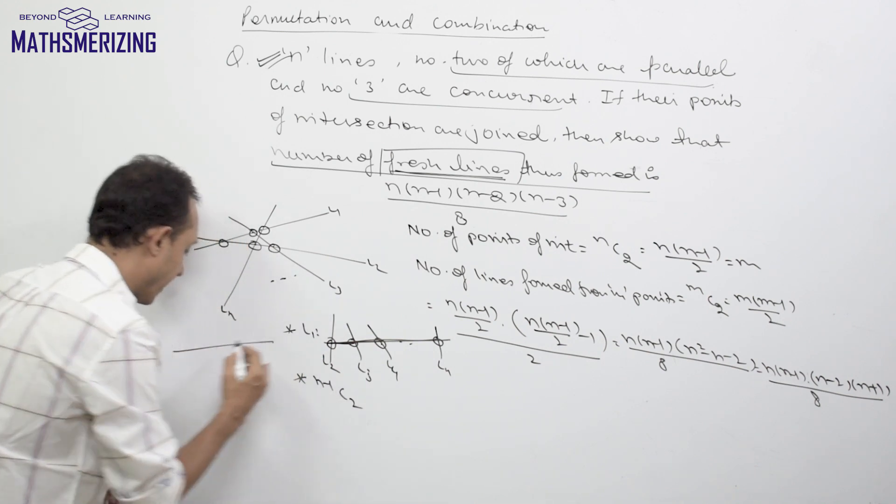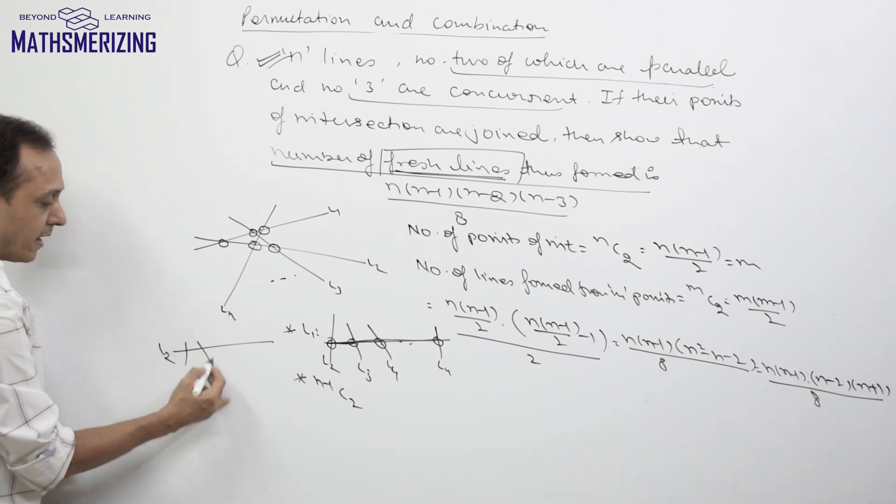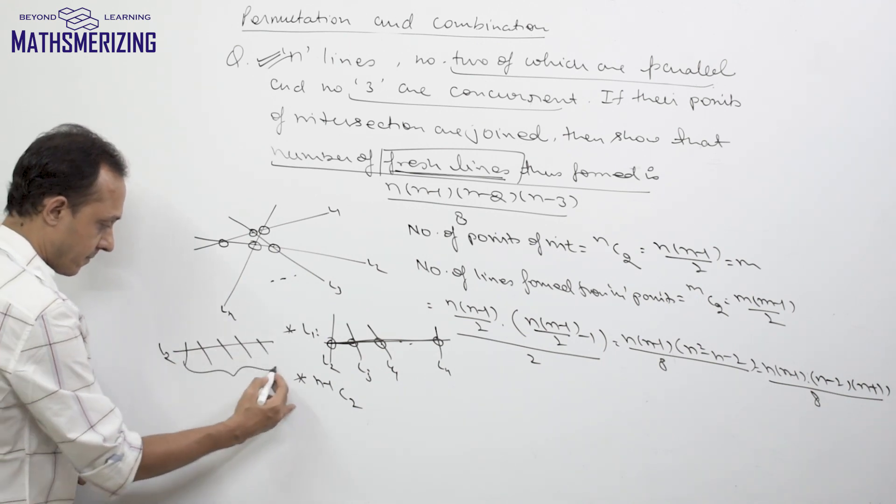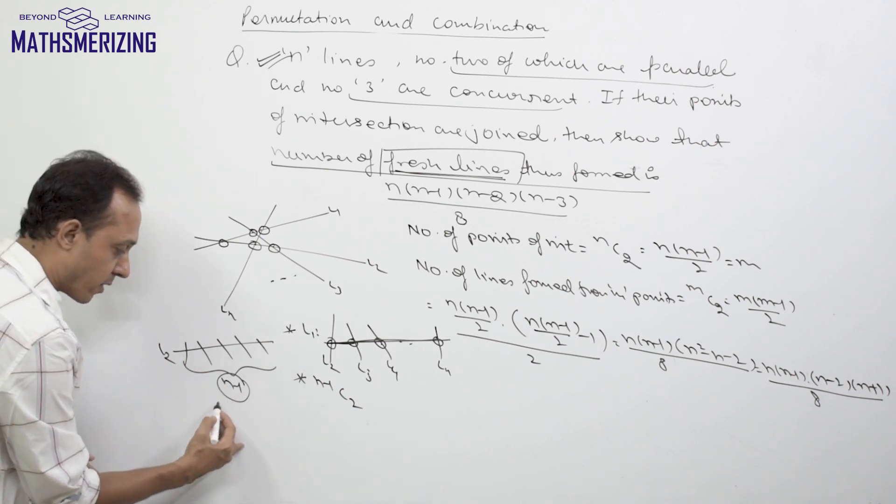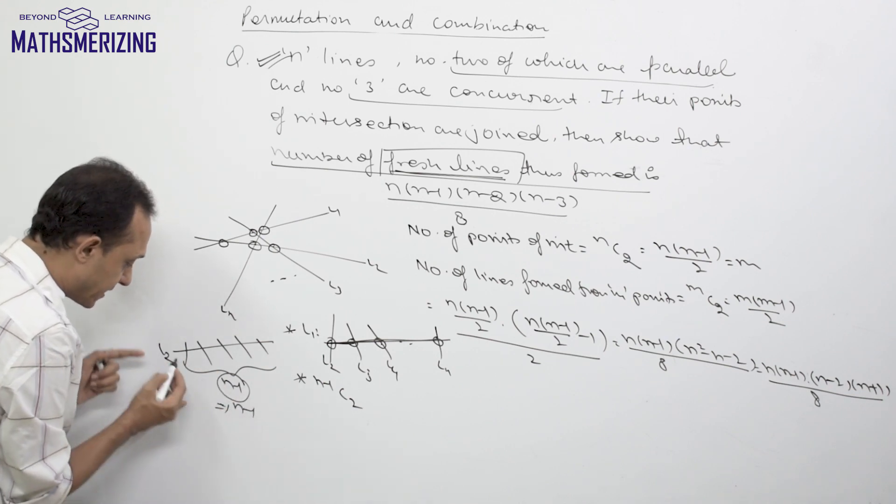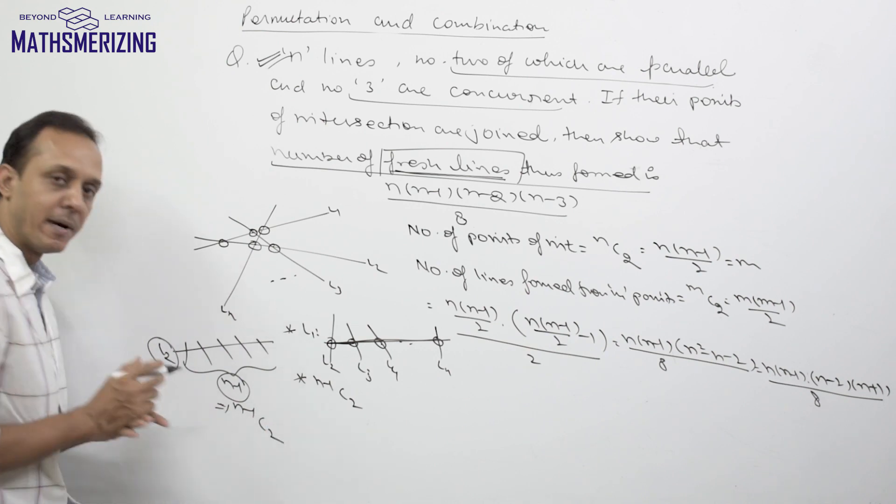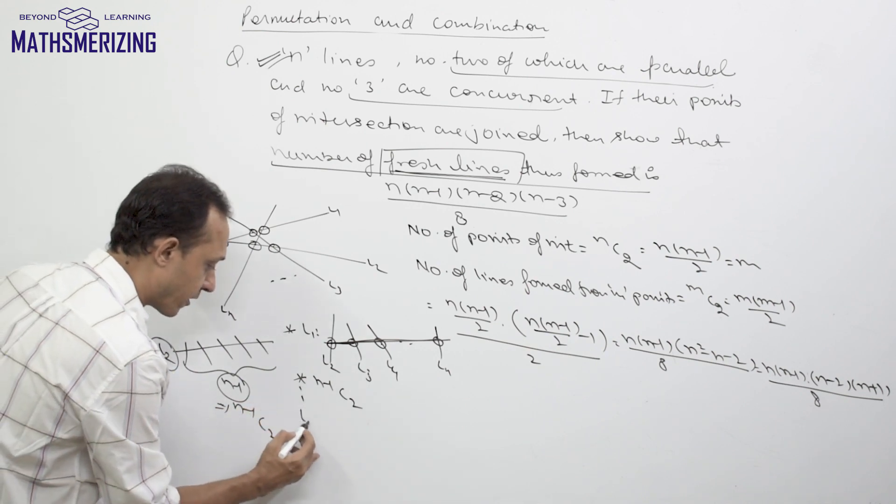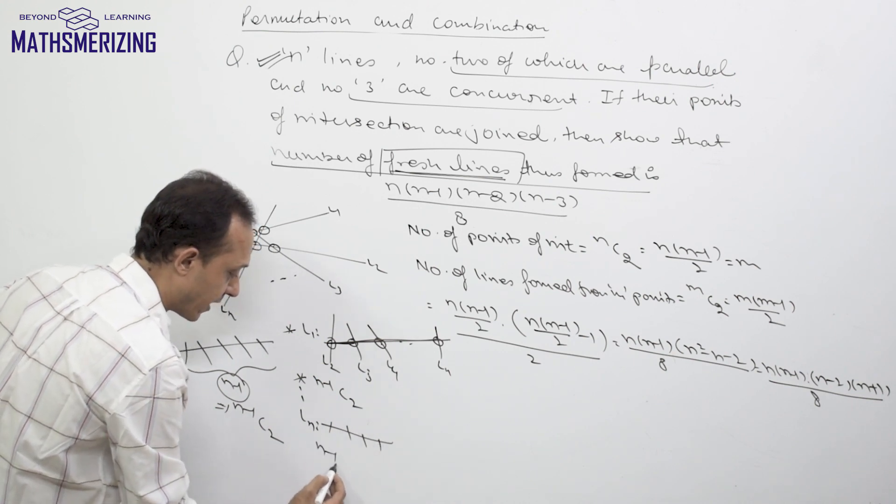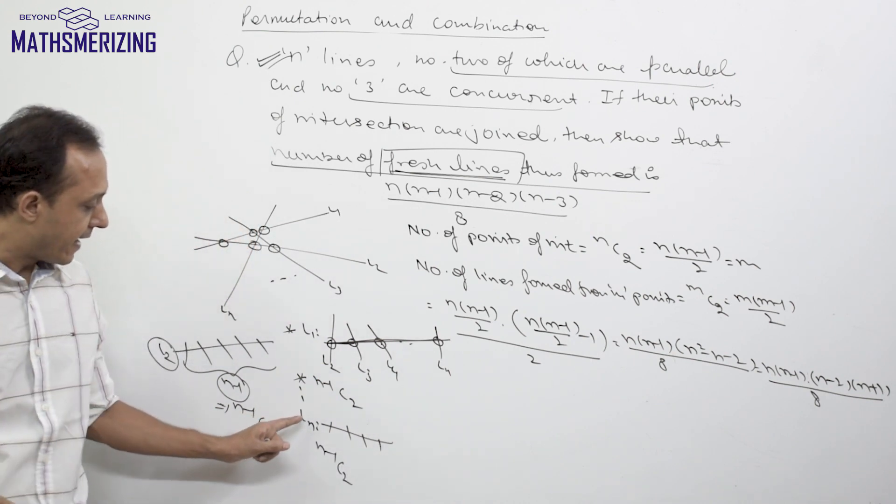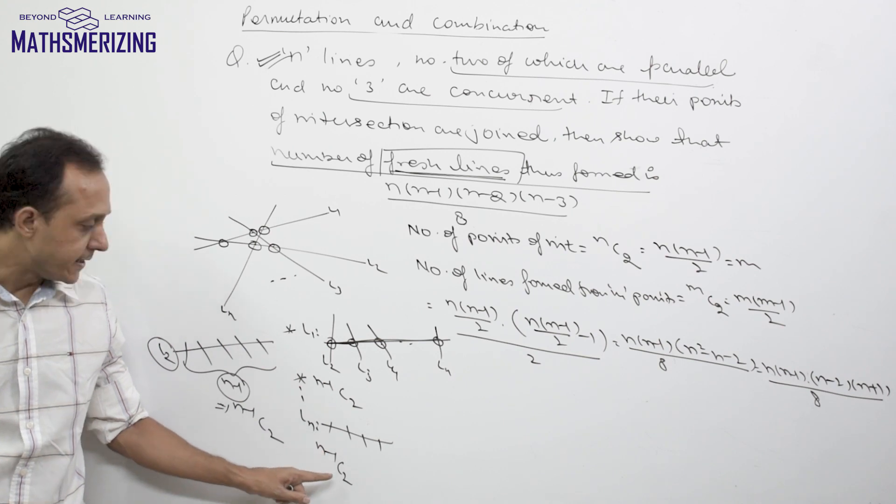In the same way, suppose I consider it for l2. For l2 again, it will intersect at n-1 points, and from these n-1 points, the number of ways in which I will get this l2 is (n-1)C2. And again for ln, there will be n-1 points of intersection. So again I will get this nth line in (n-1)C2 ways.